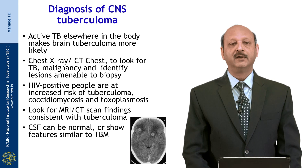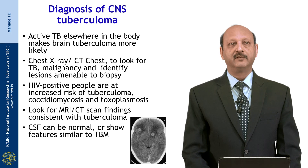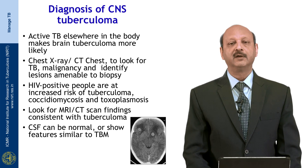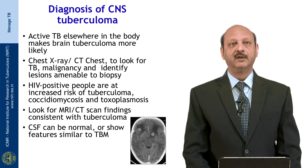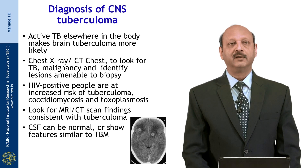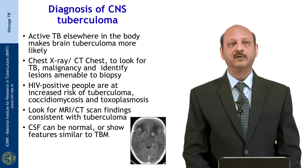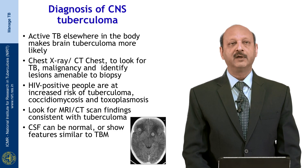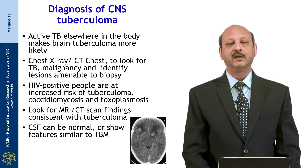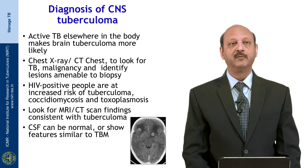For cerebral tuberculomas, active tuberculosis elsewhere in the body makes brain tuberculomas more likely. Chest X-ray and CT scan of the chest should be done to look for TB elsewhere and also for malignancy and other lesions amenable to biopsy. In HIV-positive patients, there is increased risk of tuberculomas, coccidioidomycosis and toxoplasmosis, and their CT findings can sometimes be confused with each other. CSF can be normal or show features similar to tubercular meningitis.